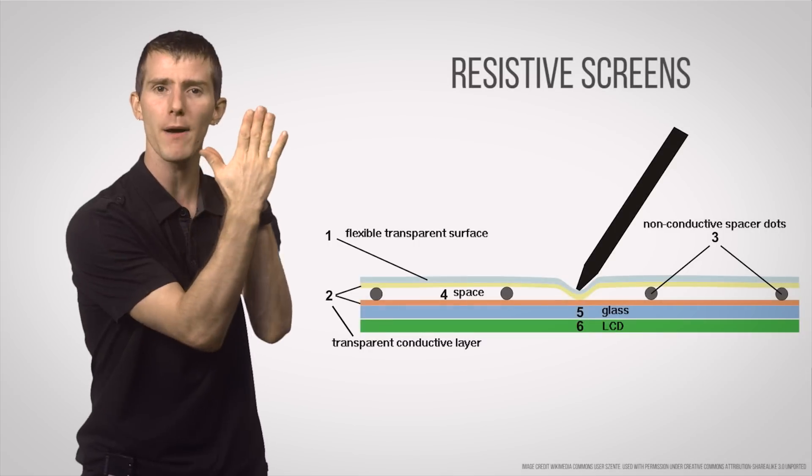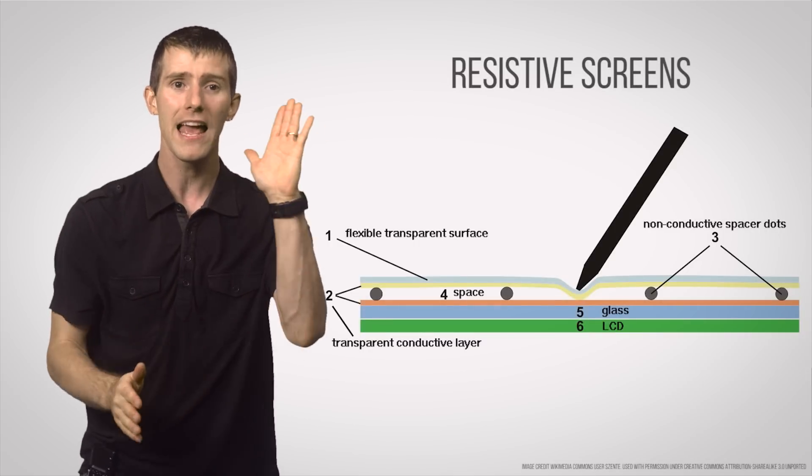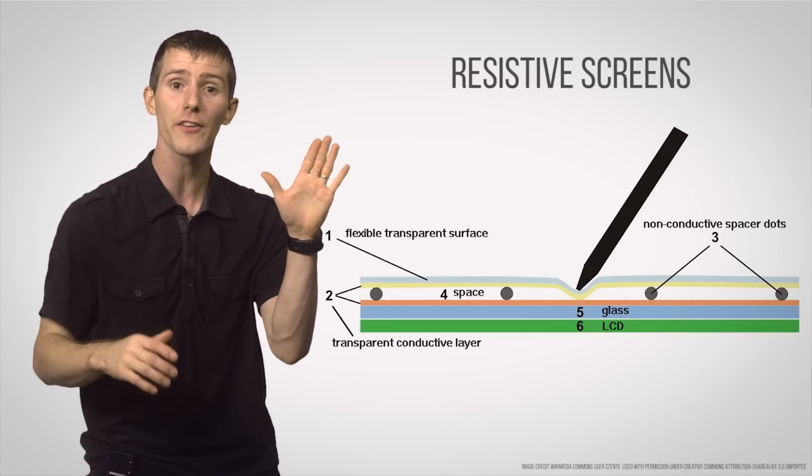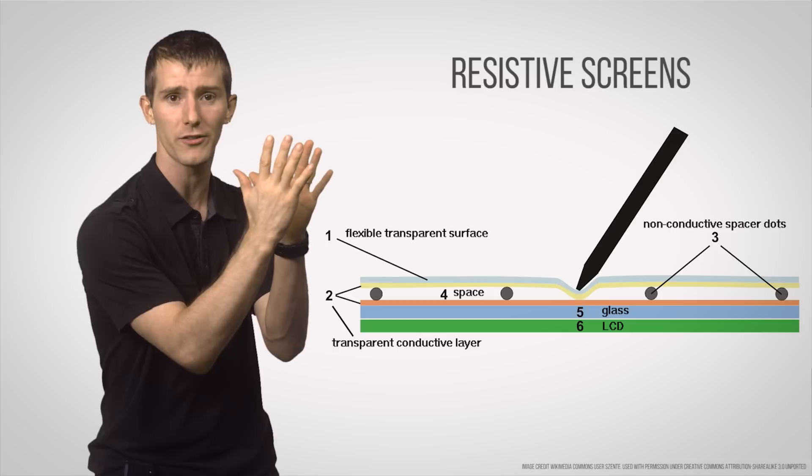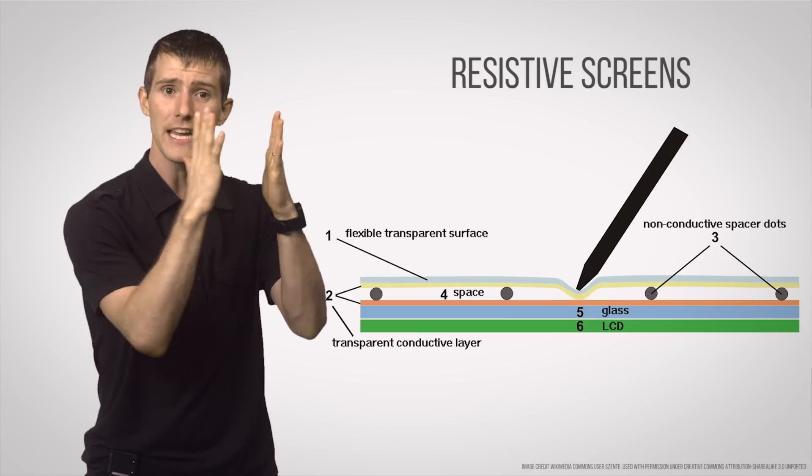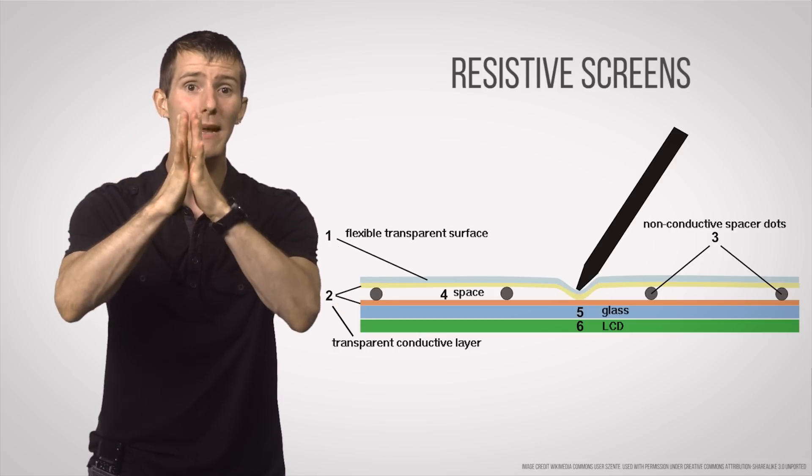These operate by having two thin sheets set apart by a small gap, one of which has a current applied to it while the other is connected to voltage sensors. Whenever the screen is touched, it causes the current and sensor layers to make contact, registering an input.